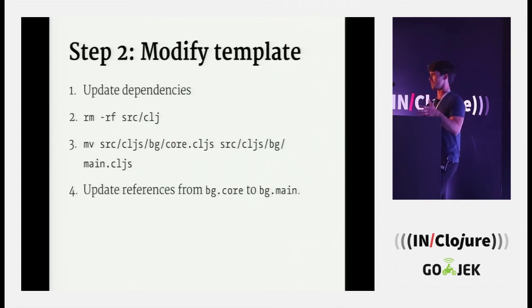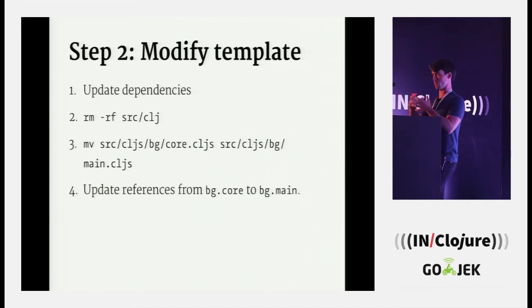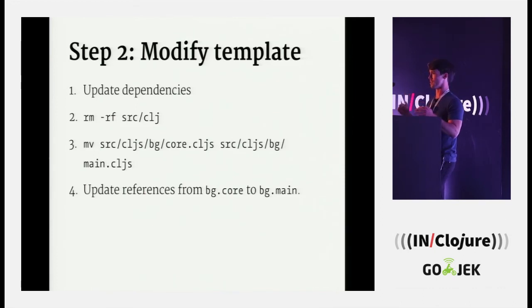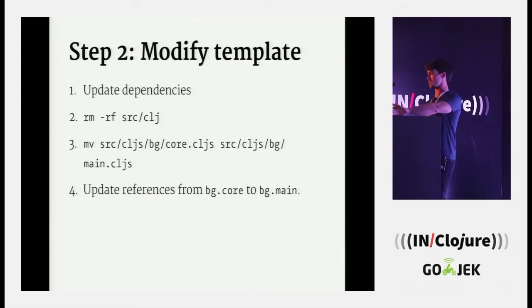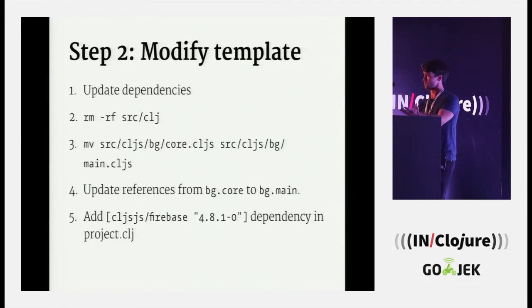Core namespaces are terrible — try not to have a core namespace. They are particularly bad in ClojureScript because it makes everything a core namespace. Stack traces and console printing are easier to read if you stop using core namespaces. Rename it to something like main. Don't do core namespaces. Also add Firebase — just drop in the dependency. We've now modified the template, so let's make sure it still builds.